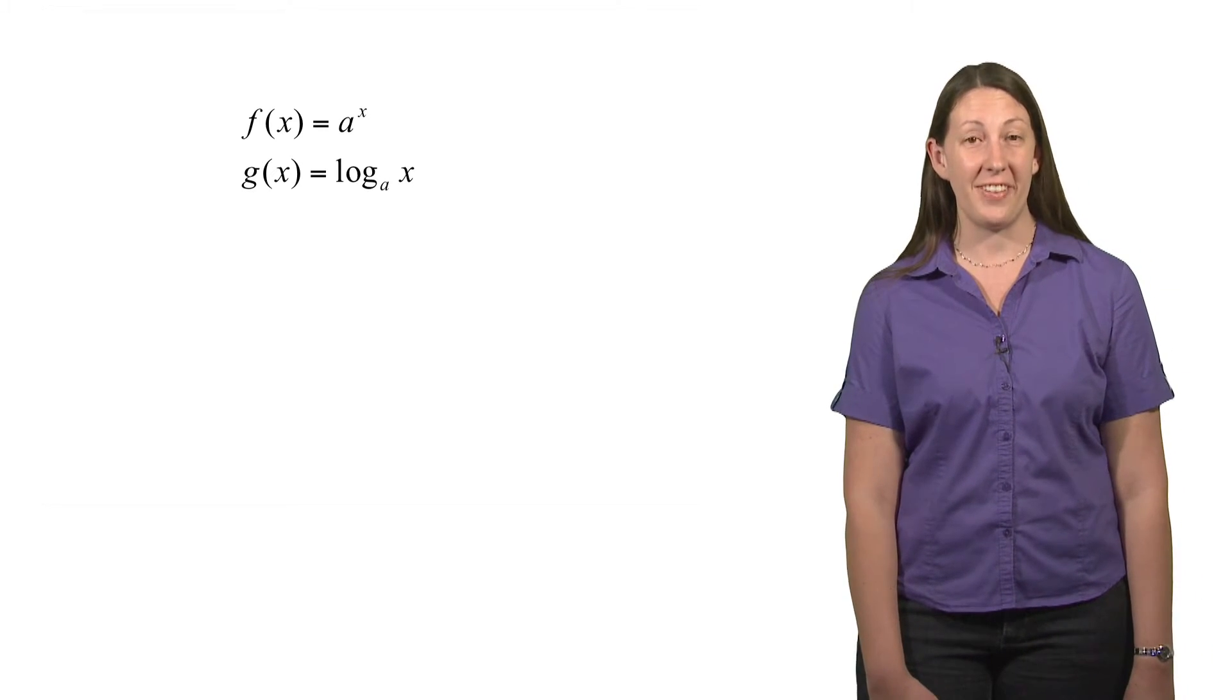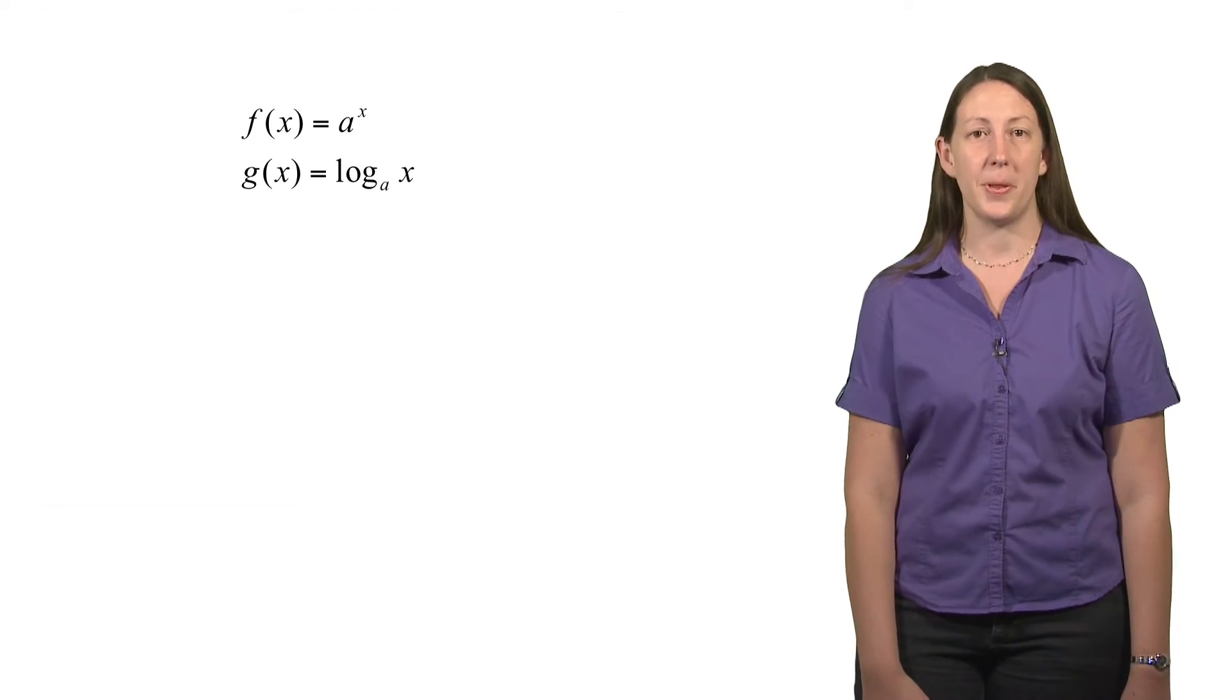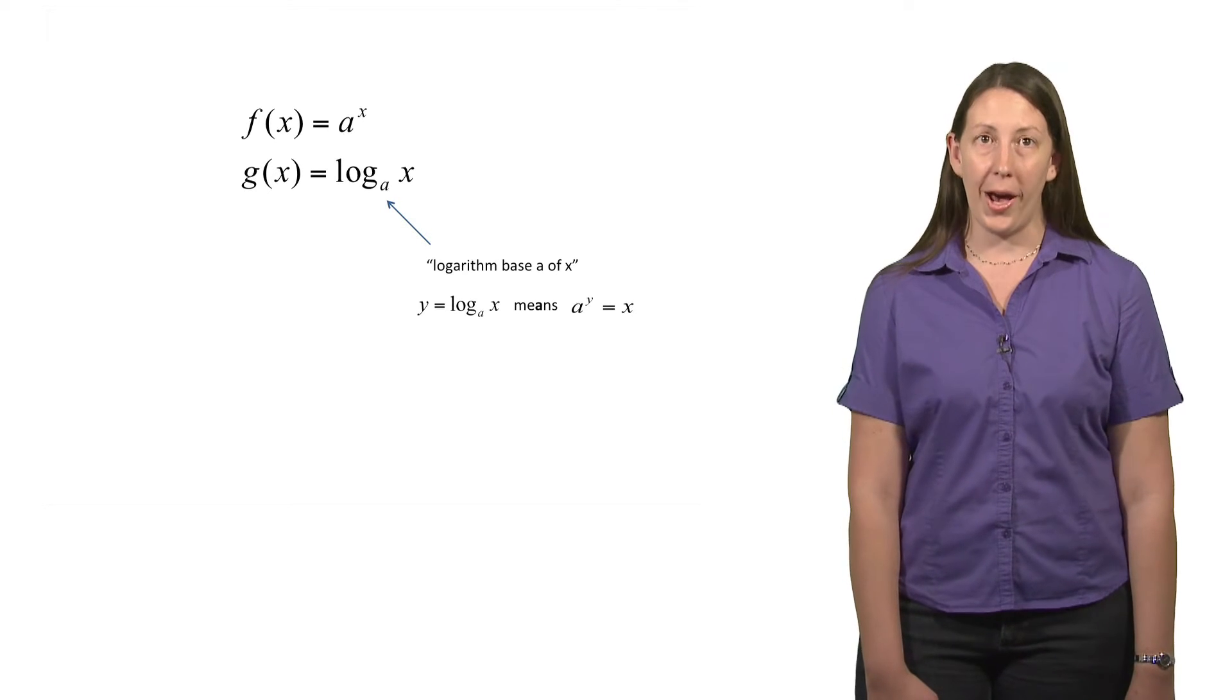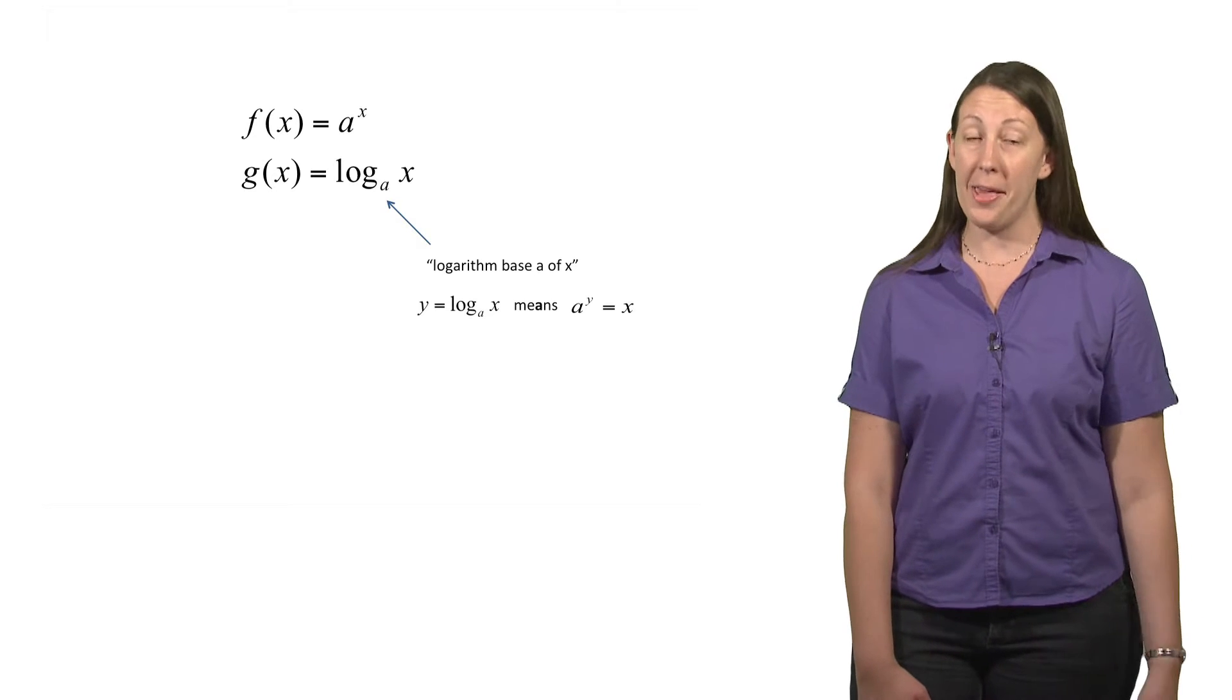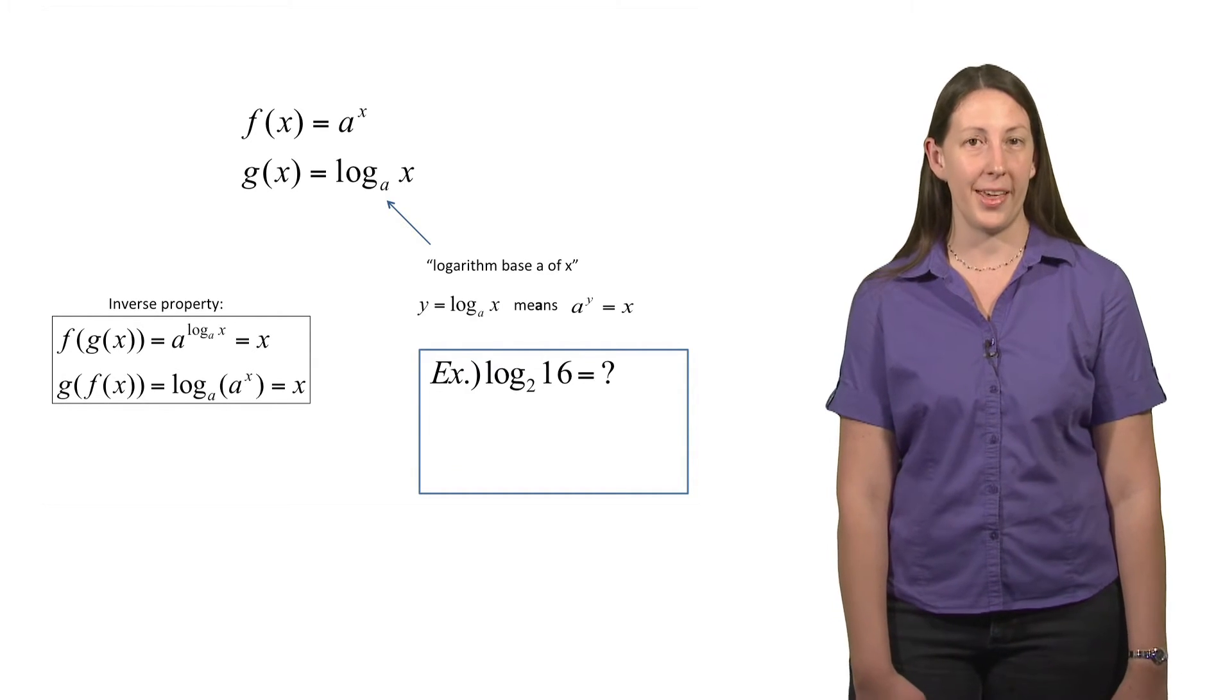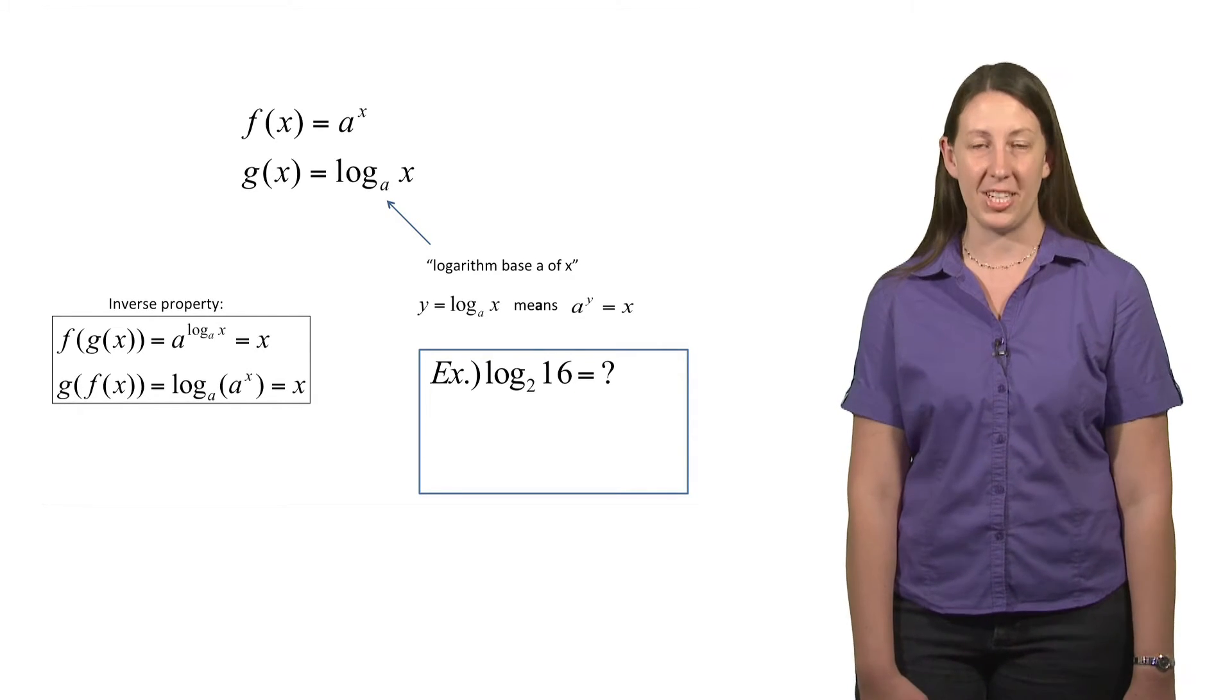Another function we can look at, g(x) equals log base a of x. Again, that subscript on the log stands for the base. We can convert back and forth between the logarithm and the exponential function according to: if y equals log base a of x, this really just means that a to the y power equals x. Once again, these two functions have the inverse property. If I compose them together, f(g(x)) or g(f(x)), the exponential and logarithm undo each other and I'm just left with the x.